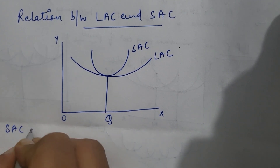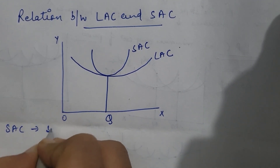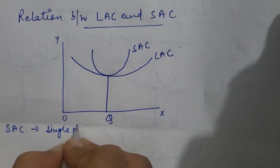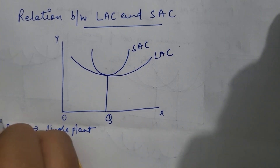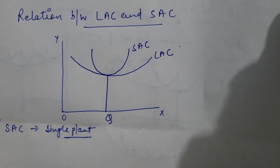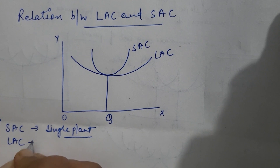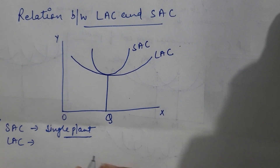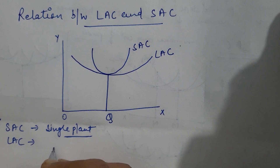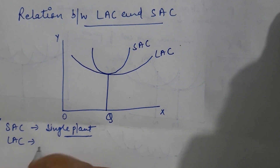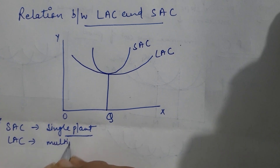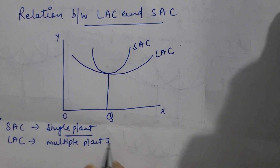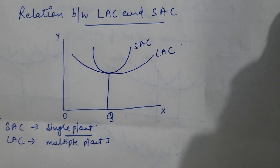The short run average cost curve refers to a single plant — it represents a single plant. Whereas the long run average cost curve is tangent to multiple short run average cost curves, meaning in the long run there could be multiple plants. So the long run average cost curve refers to multiple plants.